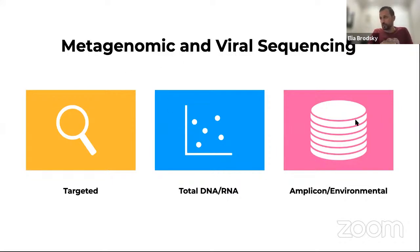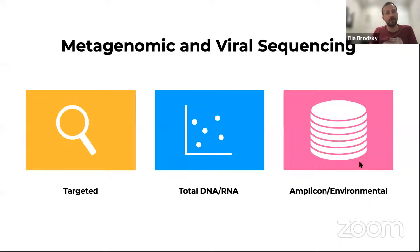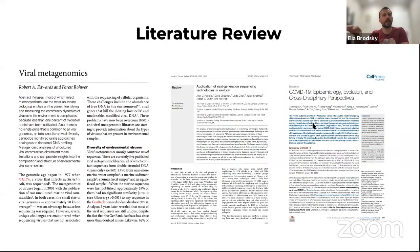Another approach is to look at amplicon or environmental type sequences. For example, 16S ribosomal RNA would allow us to study diversity and composition of bacterial samples present in an environmental sample. We have prepared a collection of articles that talk about different sequencing methods and approaches, and we will share those links on the Slack channel after today's session so anyone interested can continue and expand their knowledge.